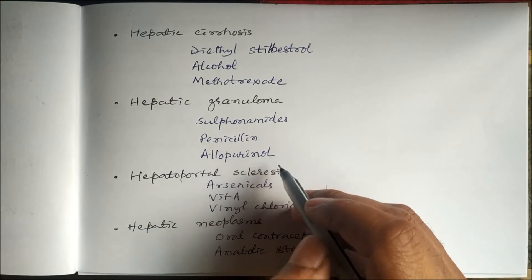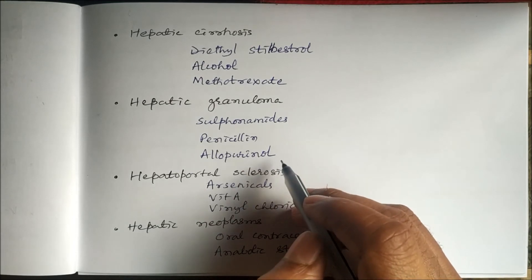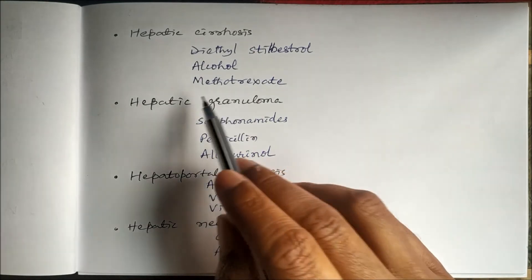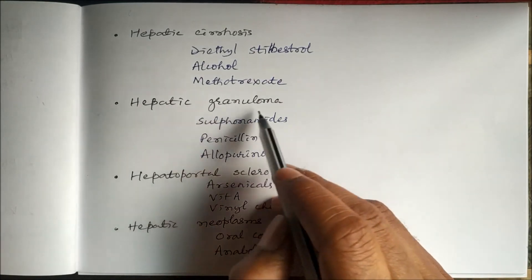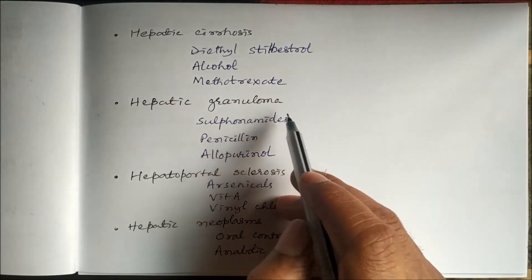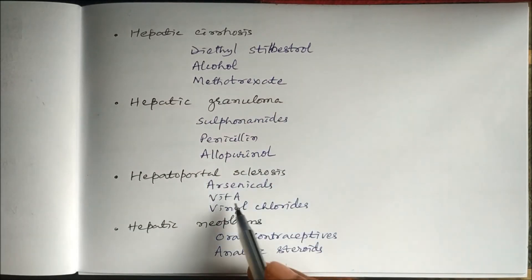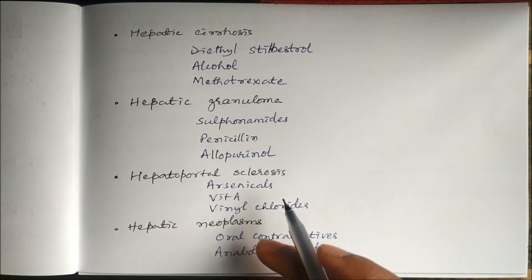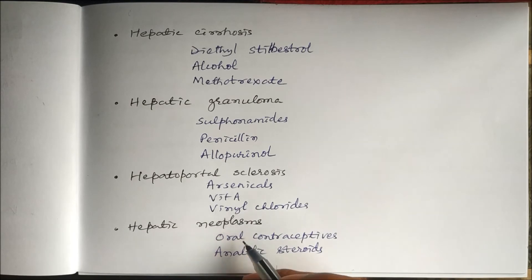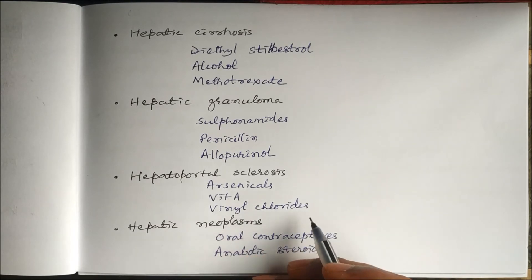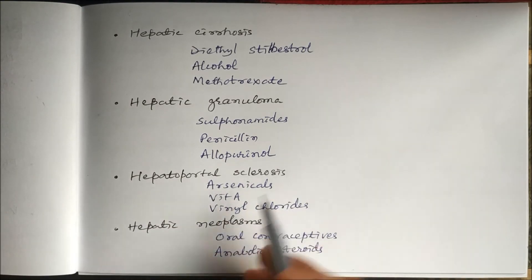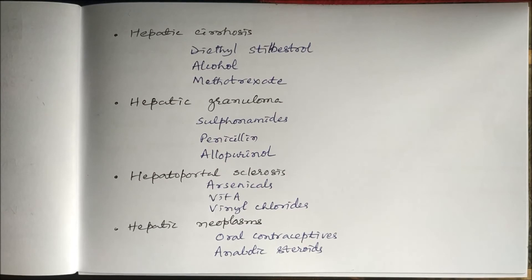Some drugs like sulfonamides, penicillin, and allopurinol — the uricosuric agent — can produce hepatic granuloma. Arsenic drugs, vitamin A, and vinyl chloride can produce hepatoportal sclerosis.